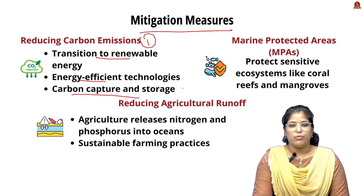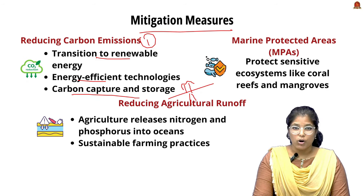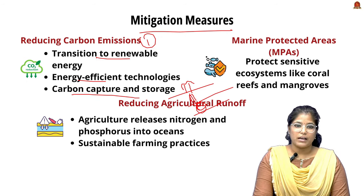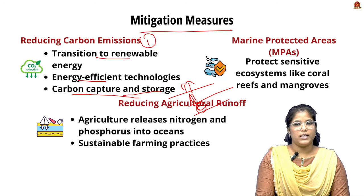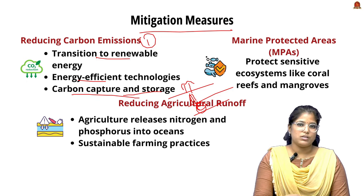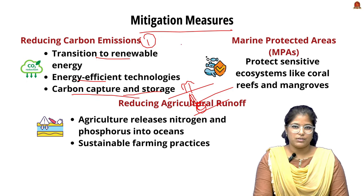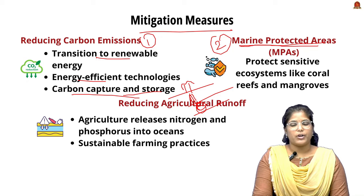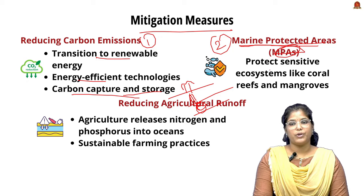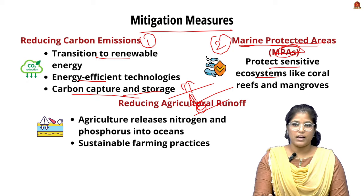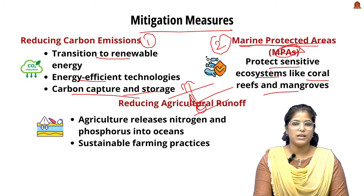We can also use carbon capture and storage technologies. The best option for carbon storage is using old oil fields by digging underground storage tunnels. This can be implemented especially in heavy industries where emissions are very high. The second mitigation step is announcing Marine Protected Areas (MPAs).